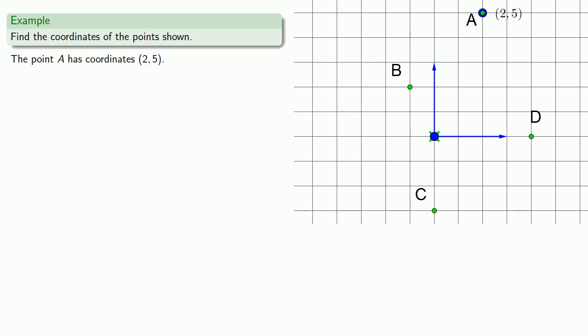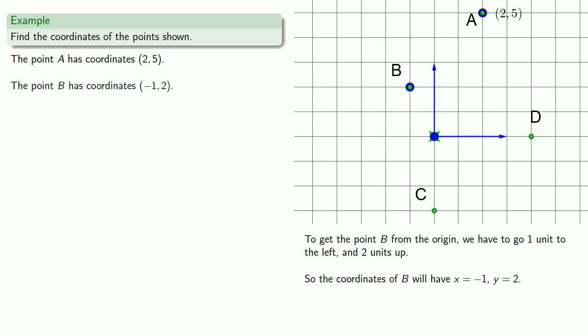To get to the point B from the origin, we'll have to go 1 unit to the left and then 2 units up. Since we're going to the left, our horizontal coordinate will be negative, so the coordinates of B will have x equals -1, y equals 2, and we can record that as (-1, 2).